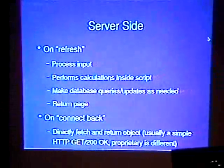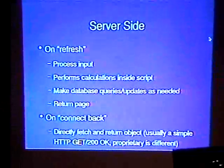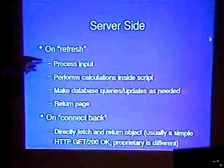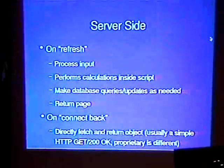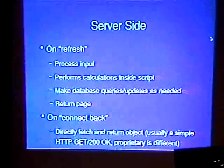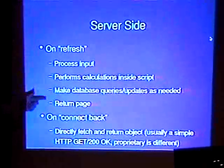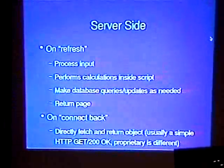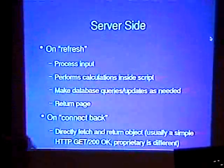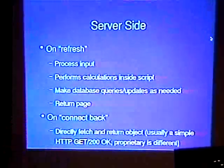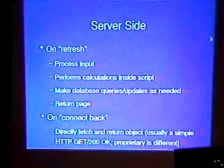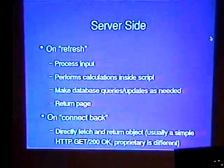Server side: on refresh, we're processing input, performing some types of calculations inside a script, possibly making database queries and updates, returning back a page. On connect-back, we're literally just directly fetching and returning some object — normally just a simple HTTP GET with a 200 OK response. Proprietary is different; we don't really know, but we don't really care.